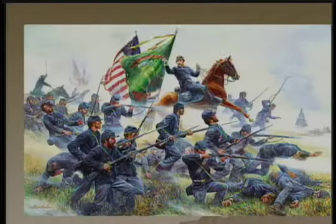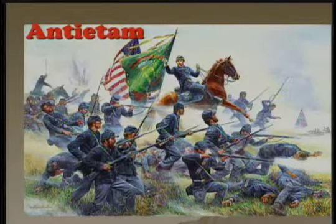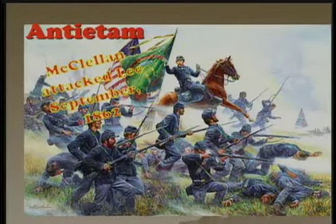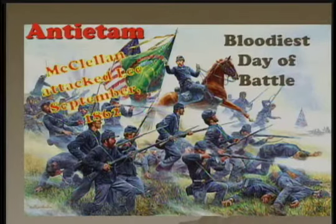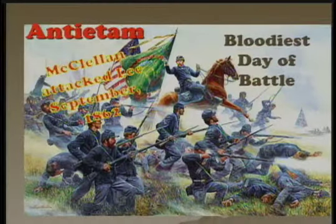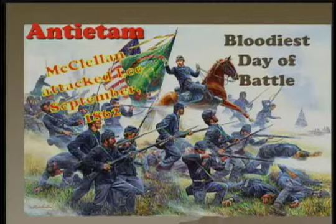The first major turning point was Antietam. At Antietam, General McClellan, leader of the Army of the Potomac — the key Union Army — tracked down Robert E. Lee and attacked him in September of 1862. This was considered to be the bloodiest day of battle in American history. Thousands and thousands of Americans lay dead on the battlefield; some said you could walk across the entire battlefield without touching the ground, only walking on the corpses that lay there.